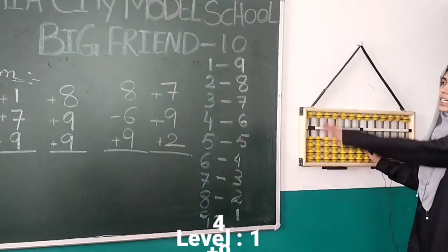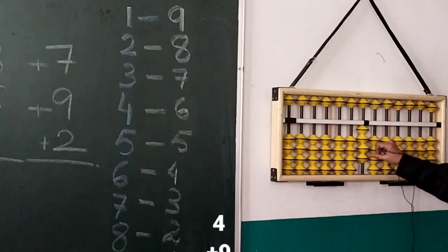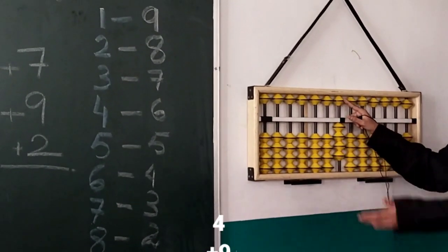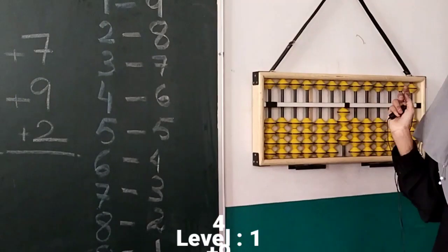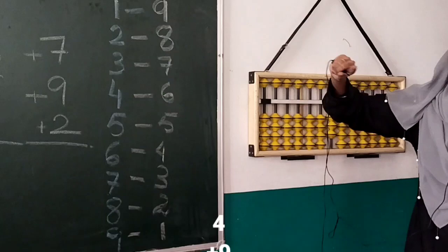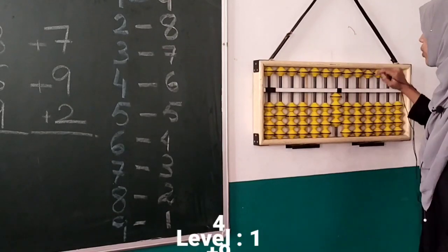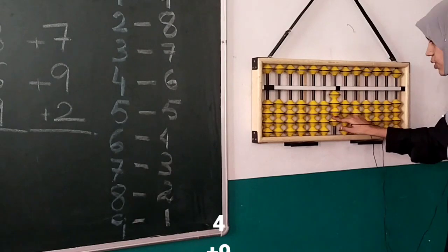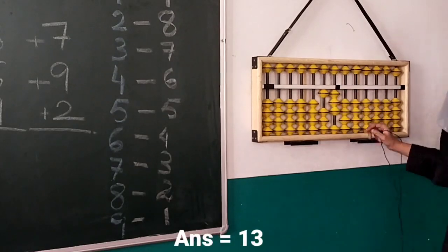For single digit numbers we can only use the unit rod. For putting four, we use four with thumb. We can see only one bead left, which has value five, so we can't put number nine. Number nine must take help of Big Friend. Big Friend is very proud and will help only on one condition: nine must cut contact with its best friend, number one. Nine agrees, cuts contact with one, and Big Friend comes to help. Our answer is thirteen.